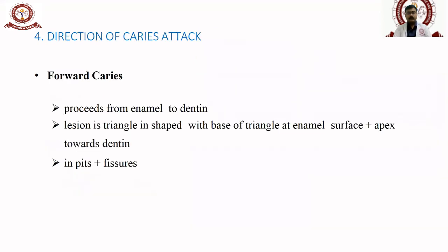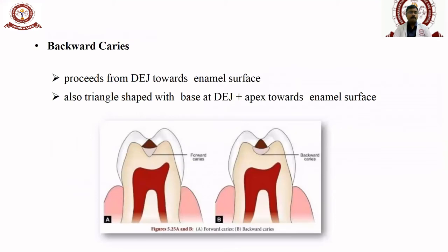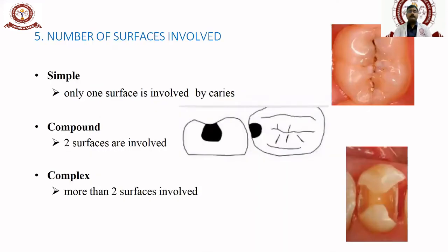Root caries is another pattern. Regarding directional caries, there is forward caries and backward caries. Forward caries proceeds from enamel to dentin — the lesion is triangular with the base at the enamel surface, commonly seen in pits and fissures. Backward caries proceeds from the dentin-enamel junction towards the enamel surface, also triangular with the base at the DEJ. Regarding the number of surfaces involved: simple involves only one surface, compound involves two surfaces, and complex involves more than two or three surfaces.